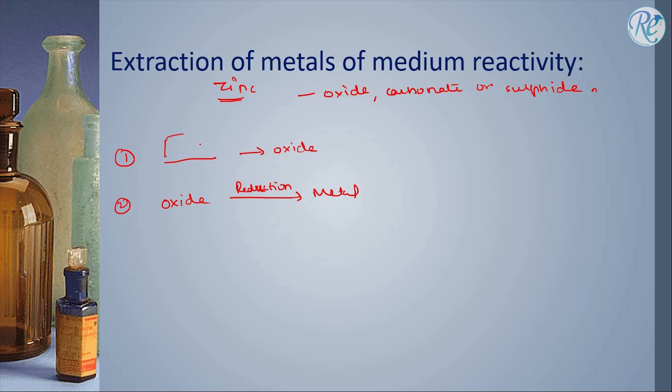Now if this compound here is already in oxide form, then no change is done and it is directly reduced. But if it is in carbonate or sulphide form, a few changes are made. This can be done in two ways.